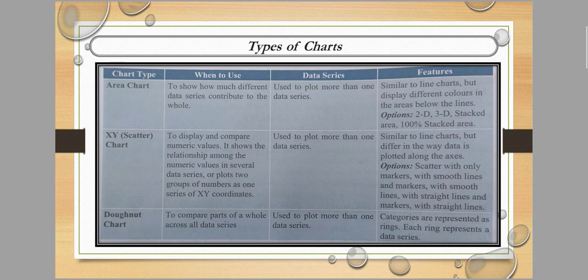Next is the XY scatter chart, used to display and compare numeric values. It shows the relationship among numeric values in several data series, or plots two groups of numbers as a series of X and Y coordinates. It is similar to a line chart but differs in the way data is plotted along the axis. It is used when comparing numeric or digit values.